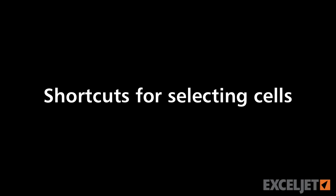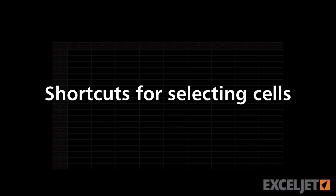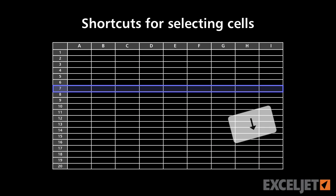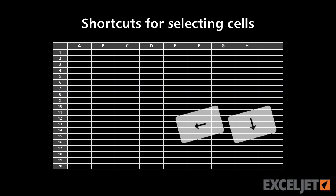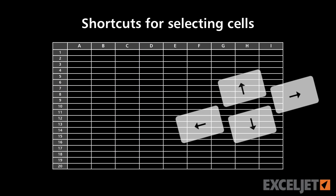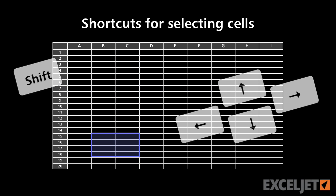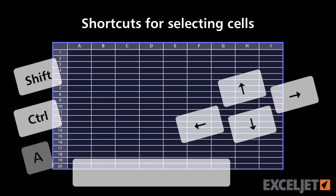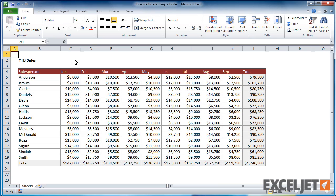Excel has many useful shortcuts for selecting cells. This includes shortcuts for selecting rows, columns, groups of cells, and even the entire worksheet. Let's take a look.